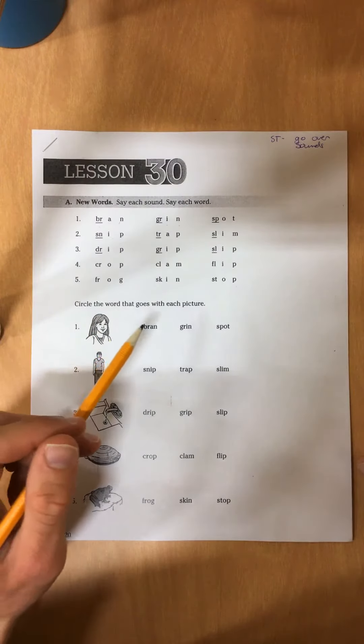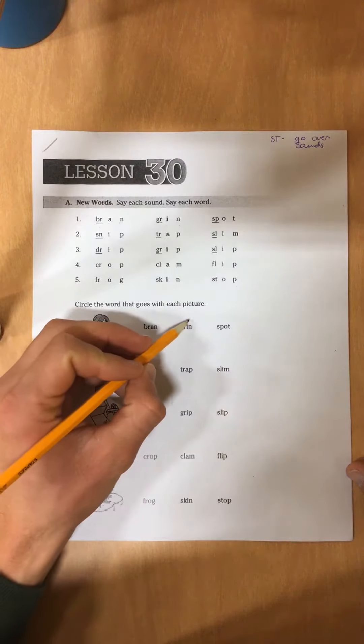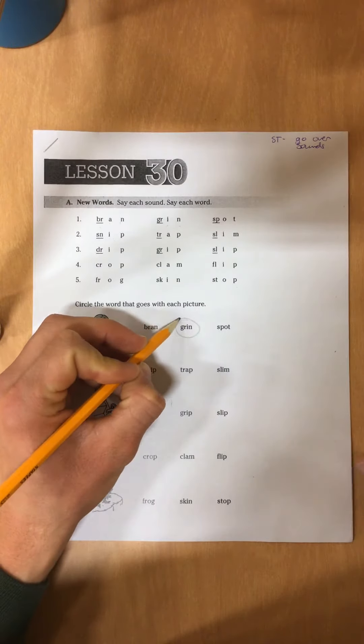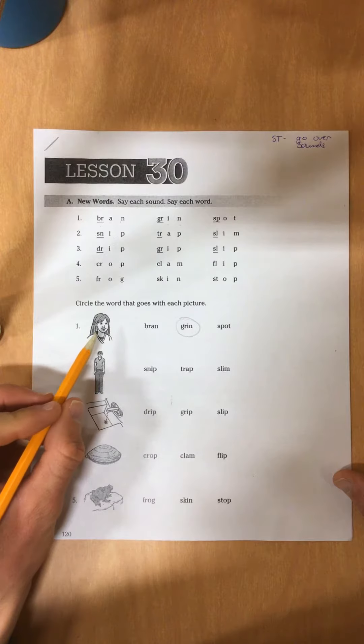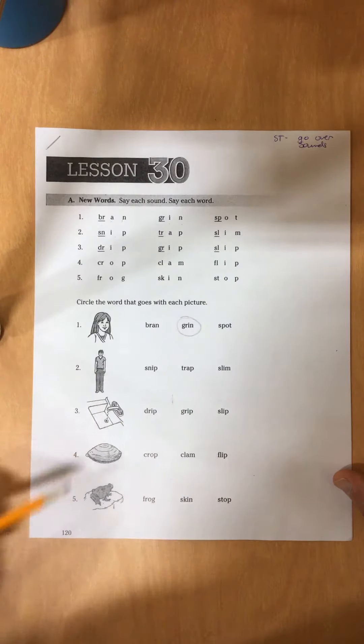Circle the word that goes with each picture. We see in the picture she's smiling or grinning, so we circle grin. Try the rest at home.